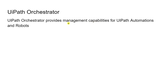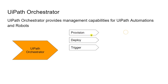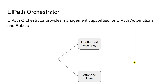UiPath Orchestrator provides management capabilities for UiPath automations and robots. Management capability means, for example, provisioning — creating new accounts, adding people, adding machines — scheduling or triggering automations, monitoring the robots, monitoring the automations, measuring how they are performing, and tracking them. All these capabilities, and more, are available with UiPath Orchestrator. The main aim is to manage your automations.